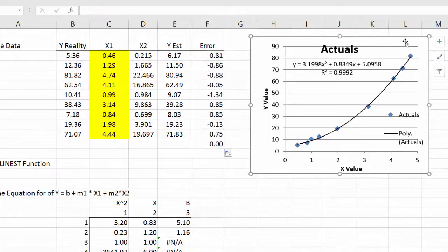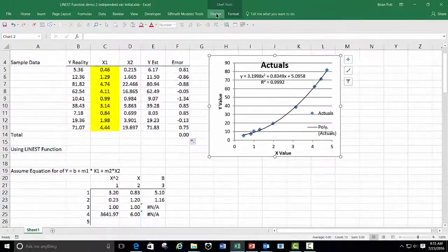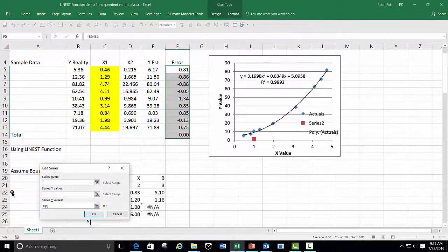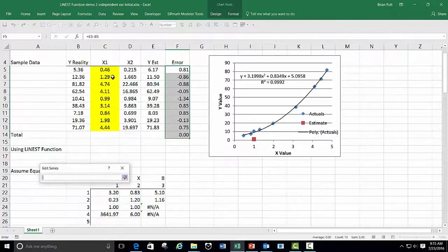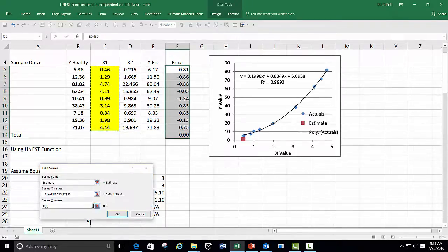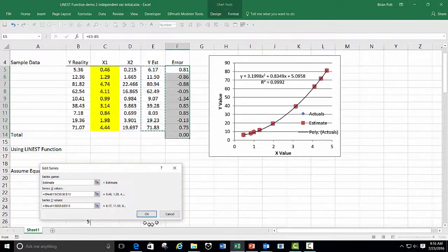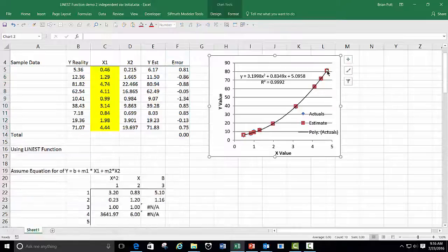I can then add my estimates to my chart over here. So I'll go to design, select data, add new data. This is going to be my estimate. And the x values are still here. And the y values now are my estimates.